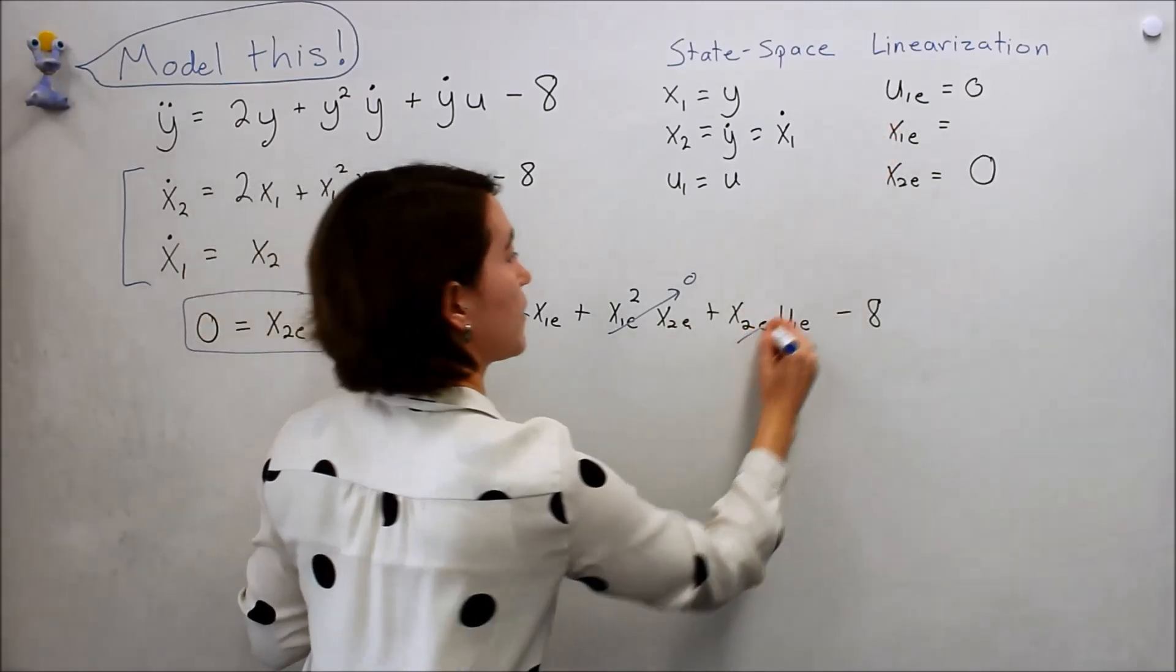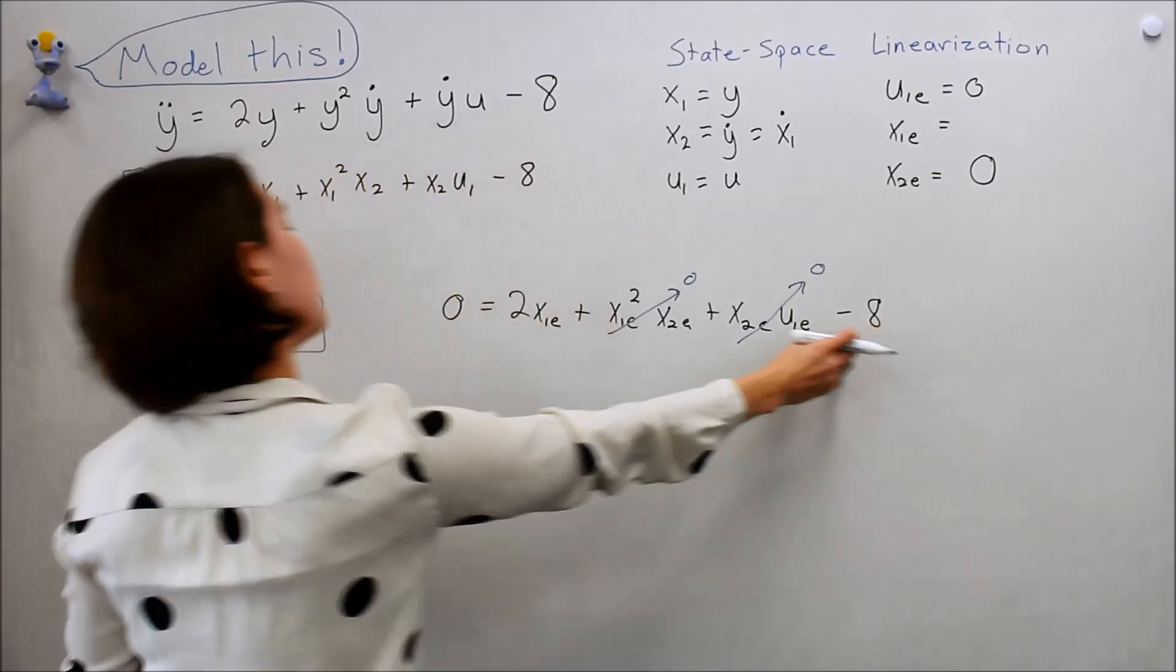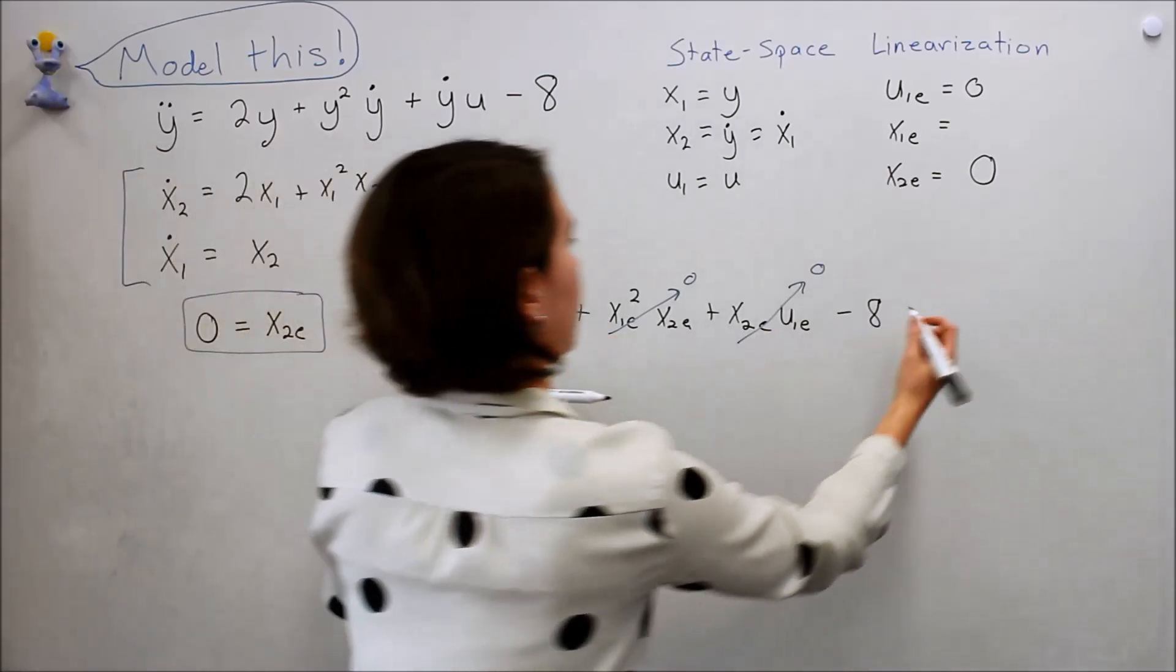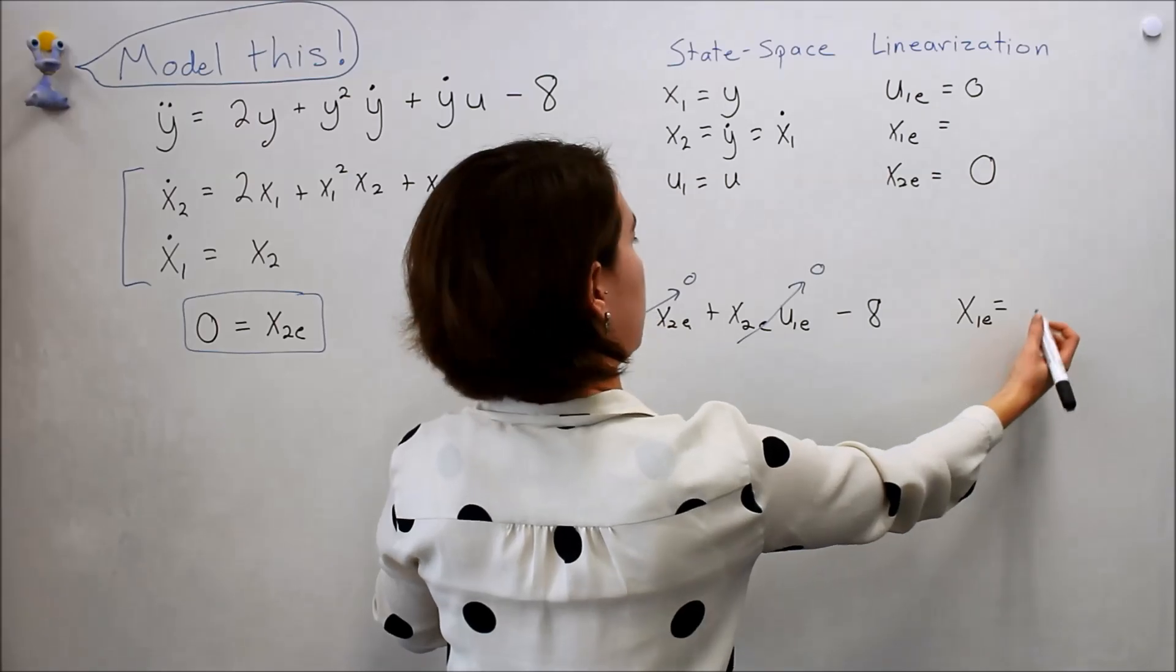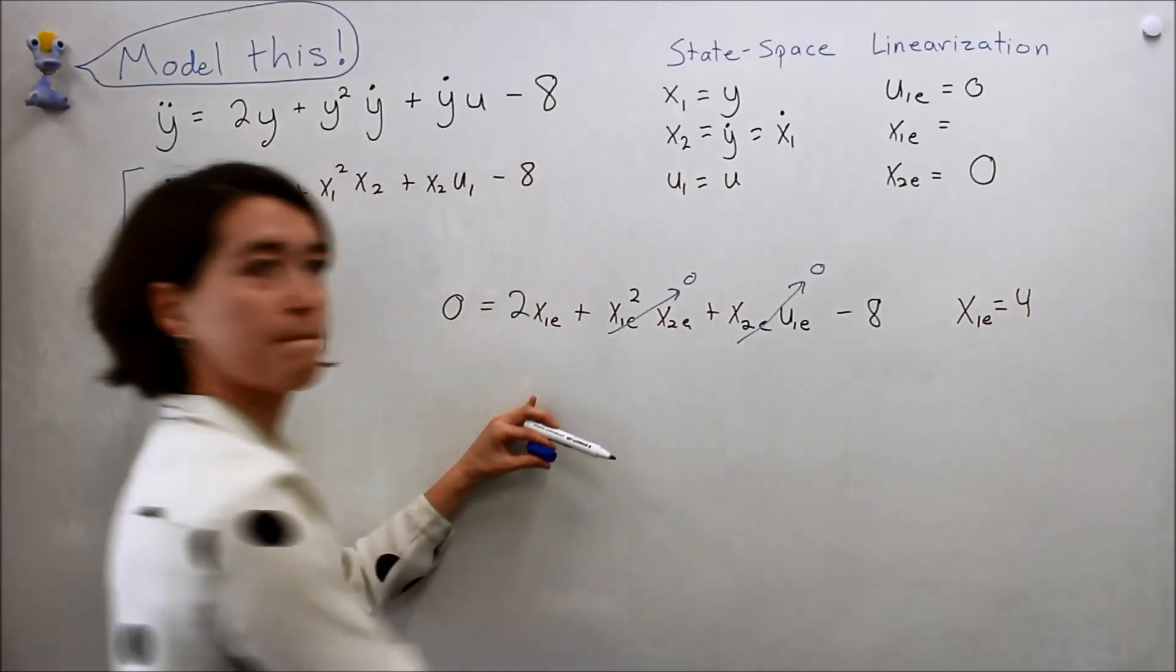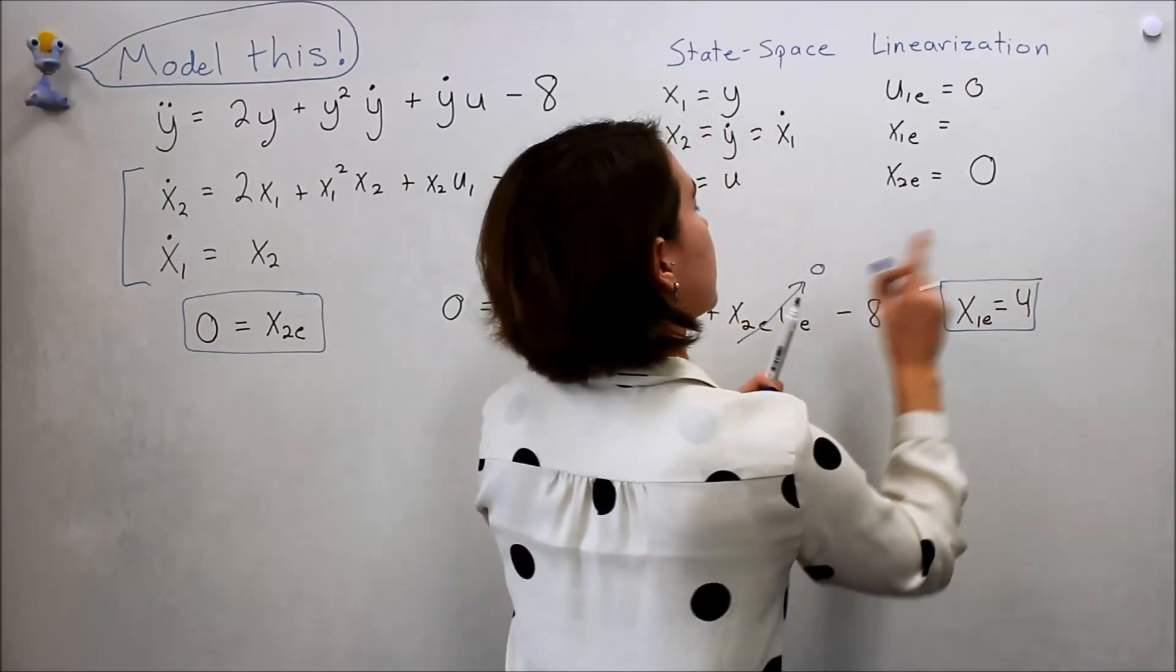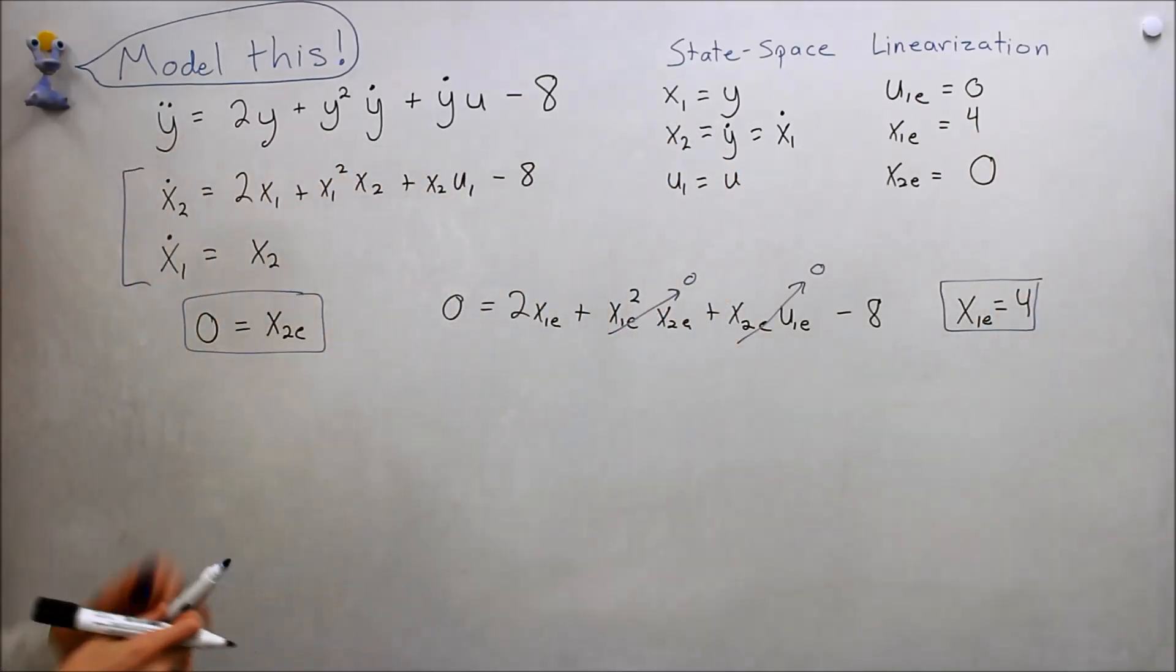We are left with just these two terms. If we move the 8 over here and divide by 2, we will see that x1e equals 4. So we have found both of our equilibrium points, this one is now 4. So now we can linearize around this equilibrium point.